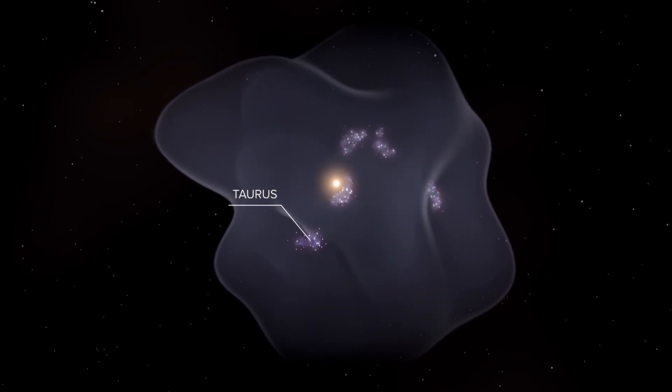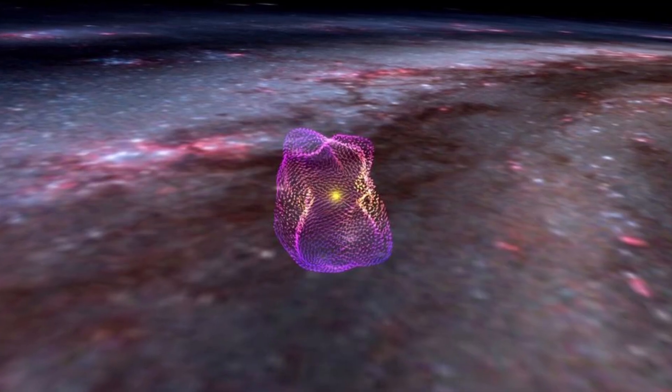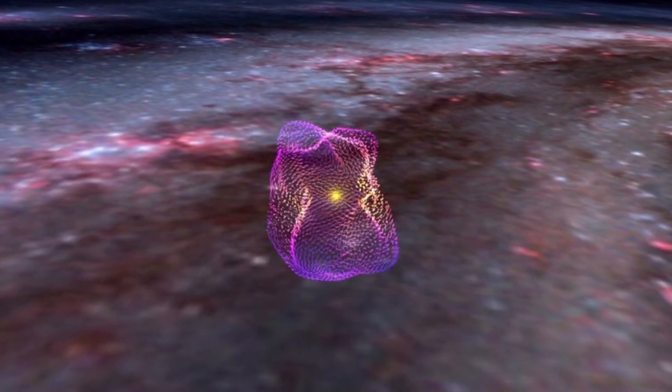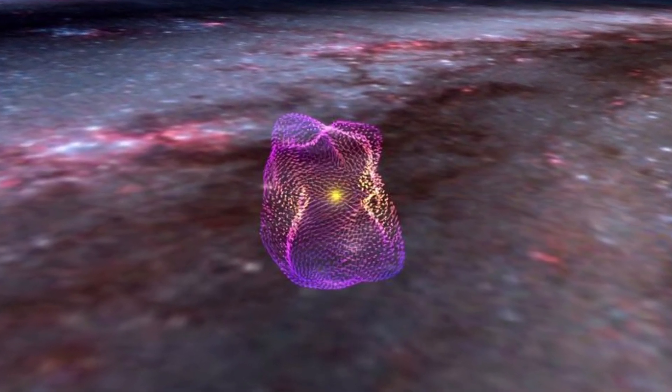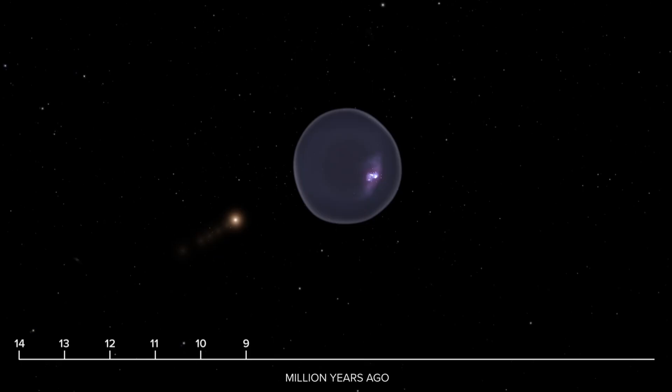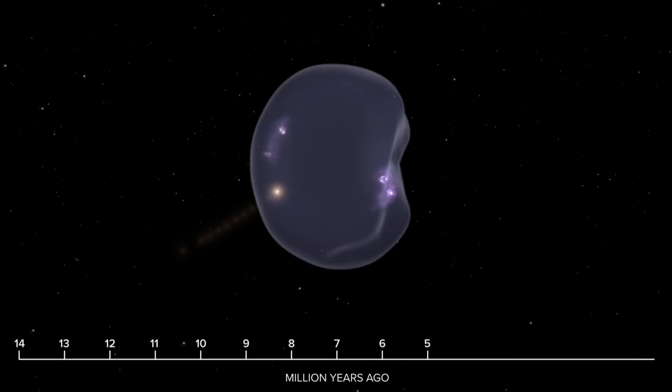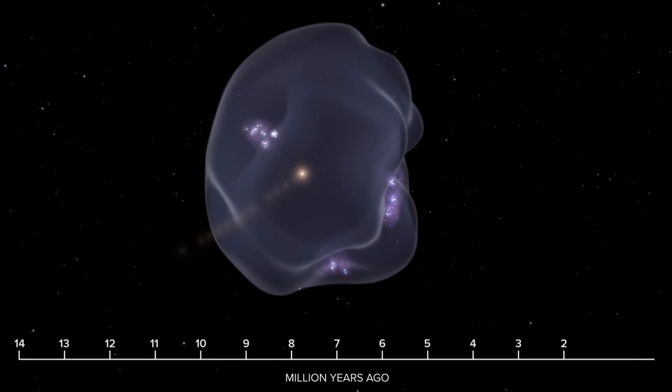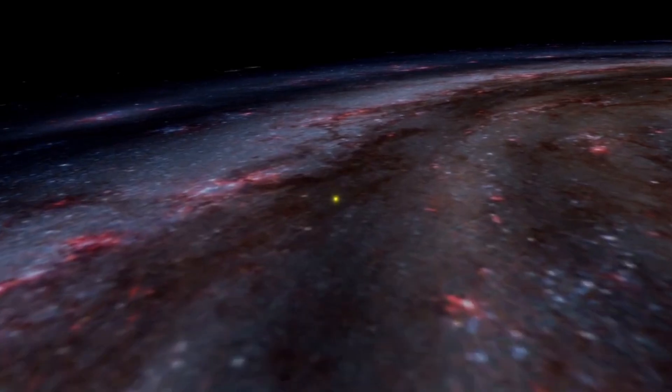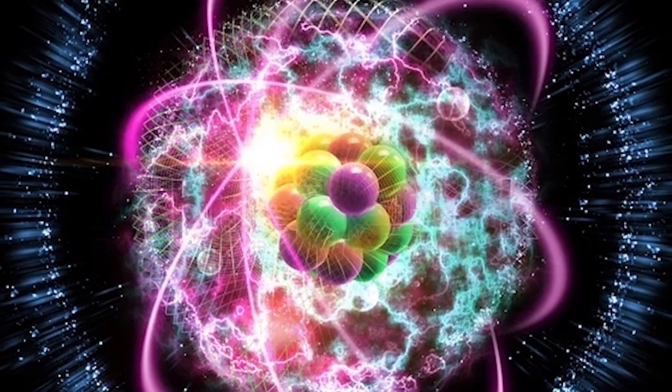Our Sun did not form along with the stars that would eventually die and carve out the local bubble. It entered the bubble's region only about 5 million years ago. Astronomers can determine that through a combination of the Sun's velocity within the Milky Way and the presence of radioactive elements found on Earth.